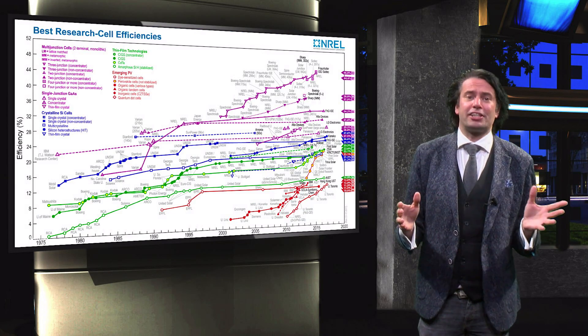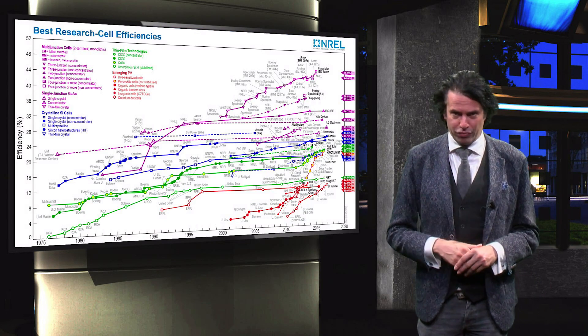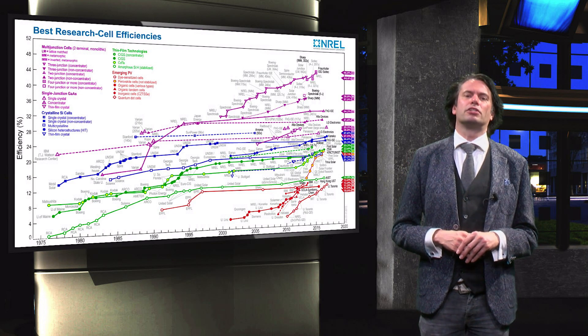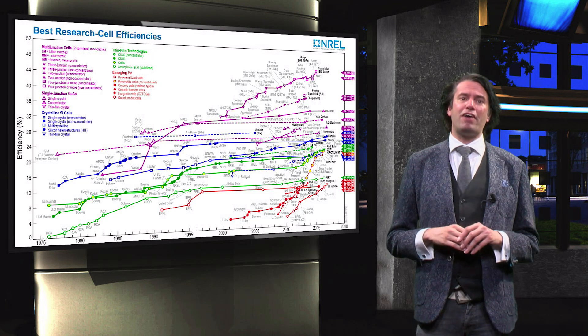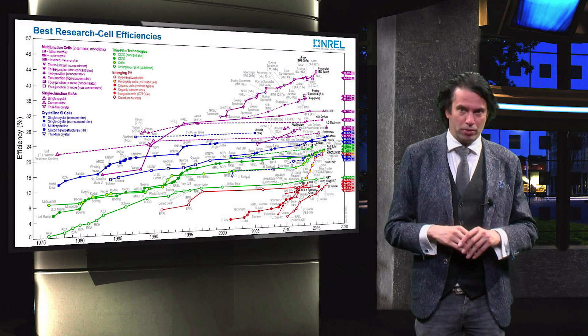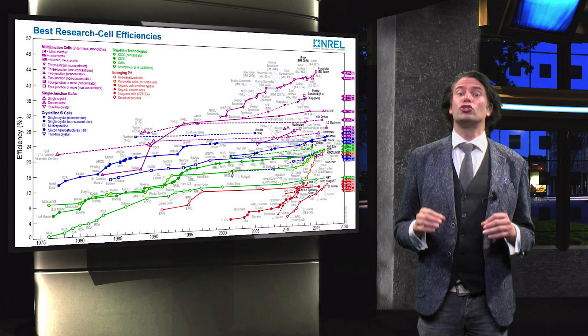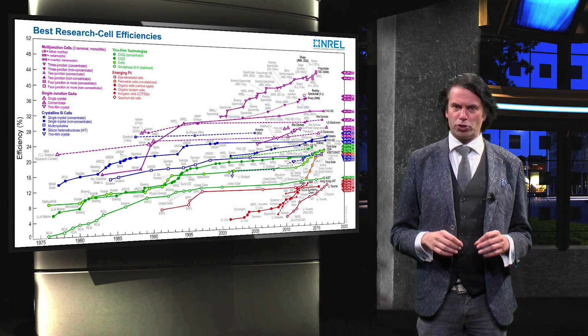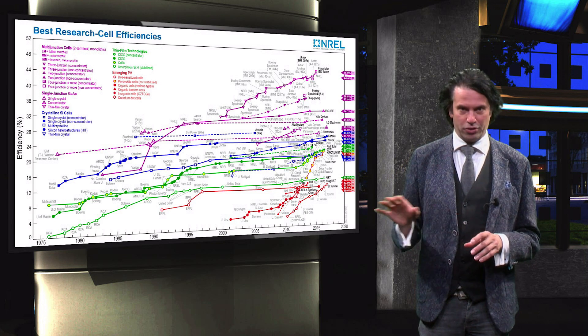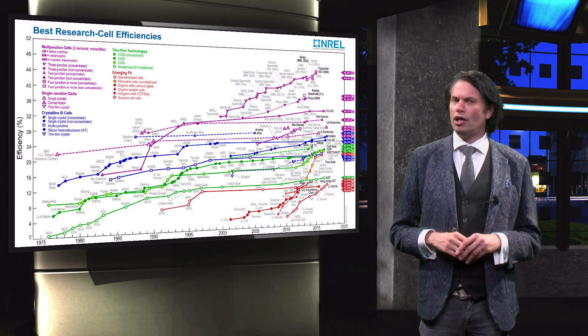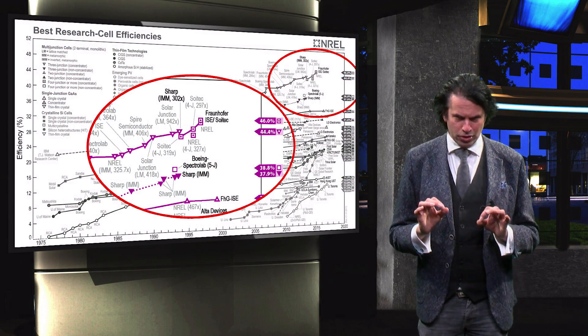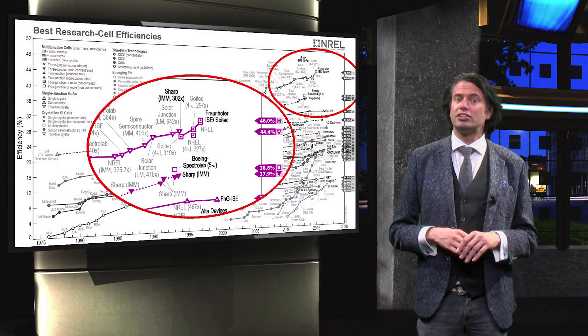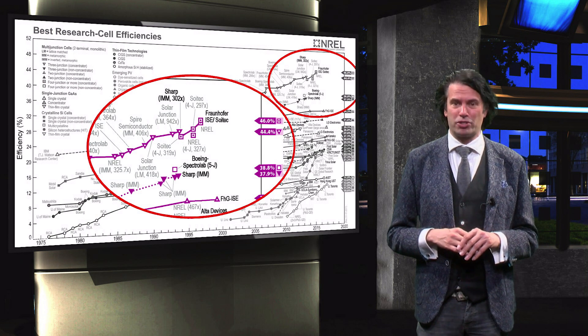The answer to this question can be found in the NREL chart for best research cell efficiencies. The multi-junction technologies based on 3.5 absorber materials are indicated here in purple. As we can see, the solar cells with 3.5 absorbers strongly outperform the other PV technologies. The current record triple junction solar cell without light concentration developed by SHARP has an efficiency of 37.9%.